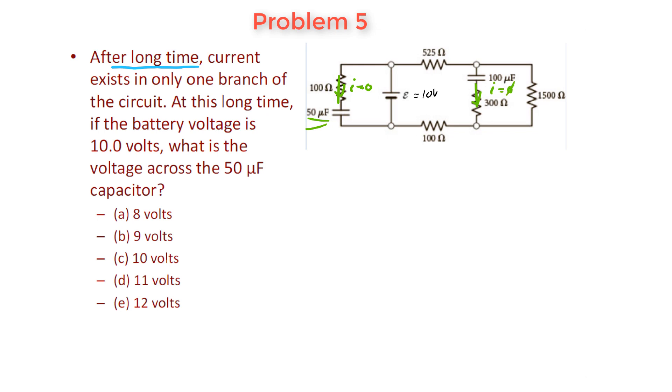If the current is equal to zero in this leftmost branch and this branch here that I've labeled, that means current can only flow over here on the outside after a long time. That's because the capacitors are fully charged up and they produce a voltage that equals the voltage of the battery, so there is no reason for charge to flow anymore.